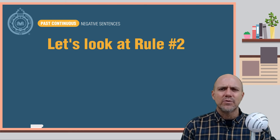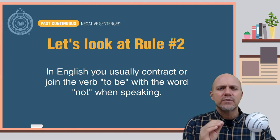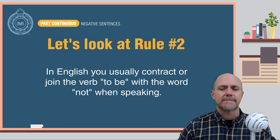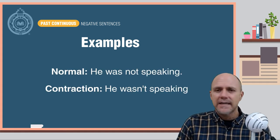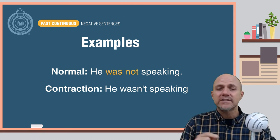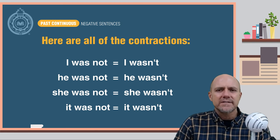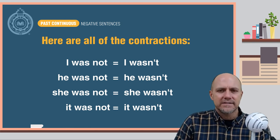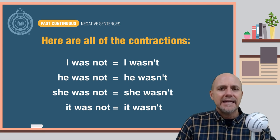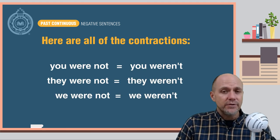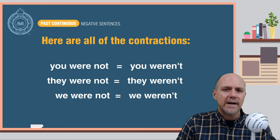Now let's look at rule number two. In English, you usually contract or join the verb to be with the word not when speaking. Here are some examples: He was not speaking — the contraction: he wasn't speaking. Did you see how was not became wasn't? Here are all of the contractions: I was not / I wasn't. He was not / He wasn't. She was not / She wasn't. It was not / It wasn't. You were not / You weren't. They were not / They weren't. We were not / We weren't.